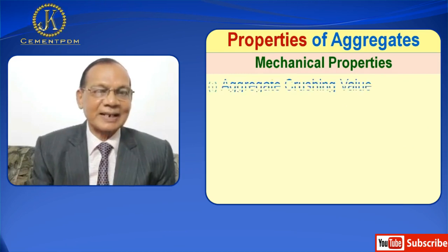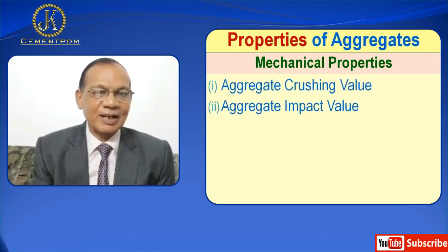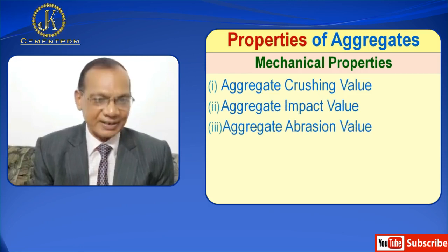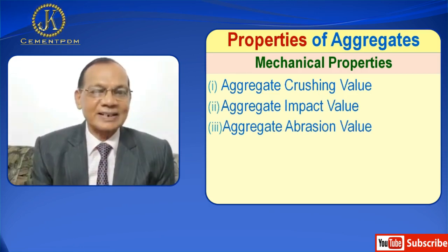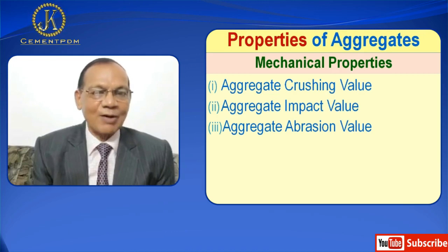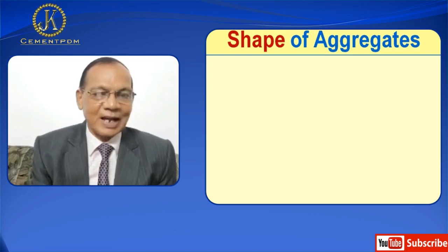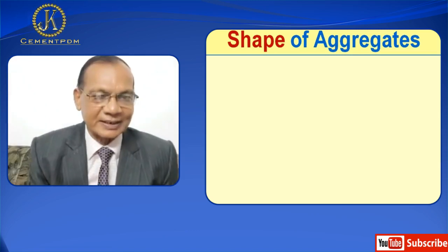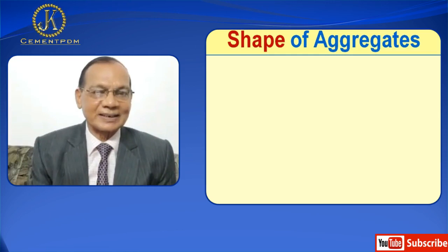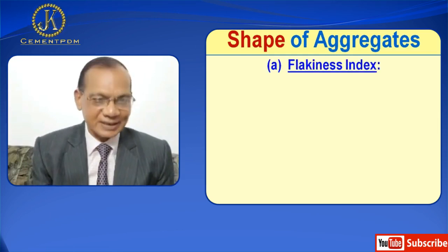Under mechanical properties we have aggregate crushing value, aggregate impact value, and aggregate abrasion value. I have already discussed some of the physical properties of aggregate. Now I will discuss remaining physical and mechanical properties of aggregate one by one. Now coming to physical properties of aggregate: shape of aggregate.